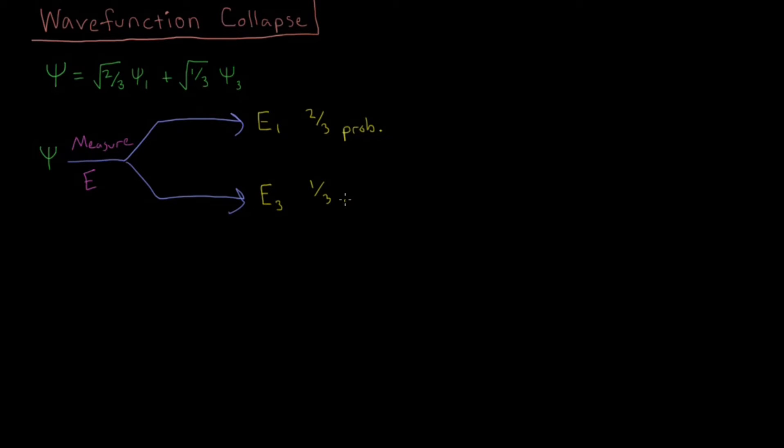And you'll notice that these two probabilities sum to 1, and that's good, because that means there is a 100% chance we measure one of these two values. And that also means we properly normalize our wave function. Okay, so we've talked about that previously.